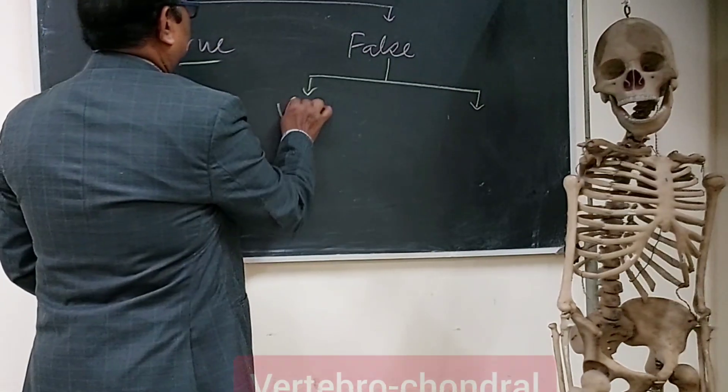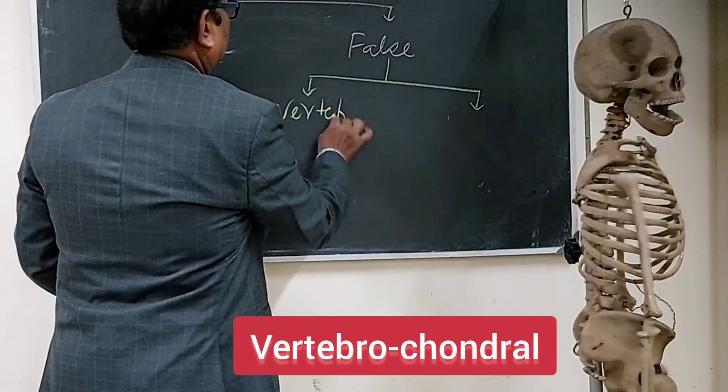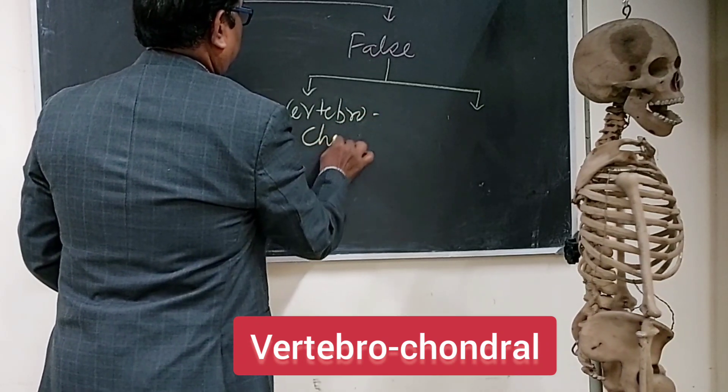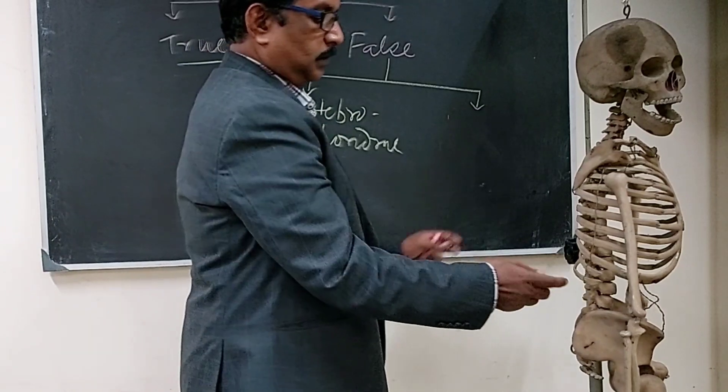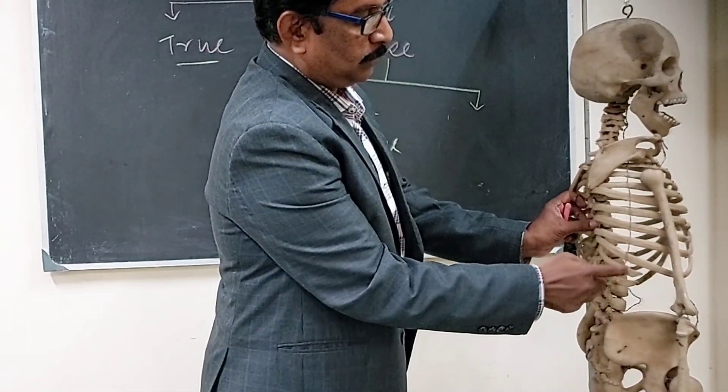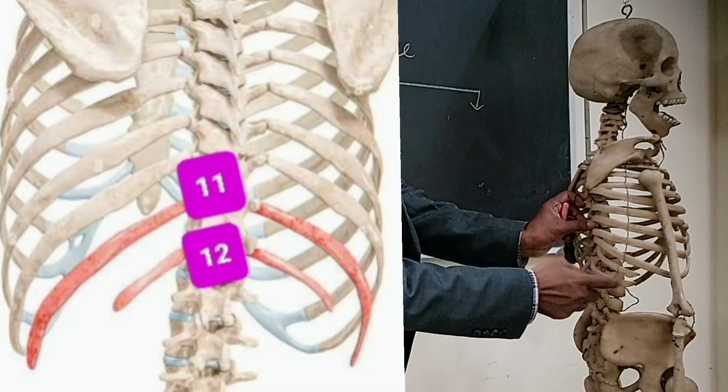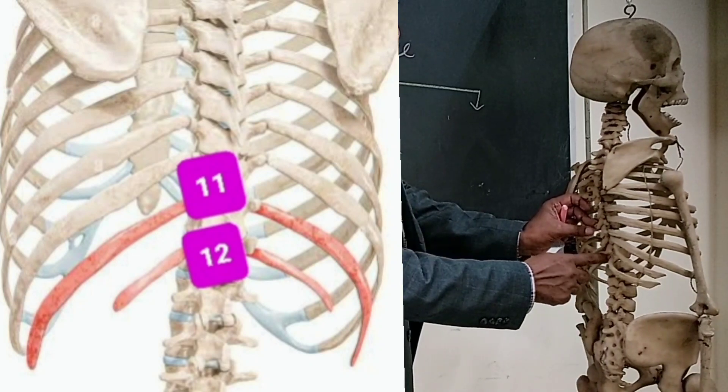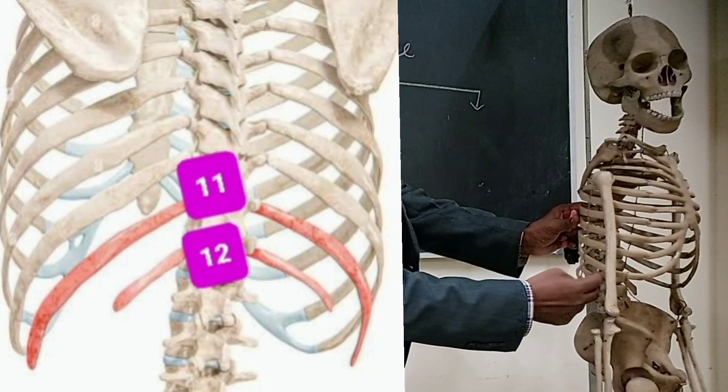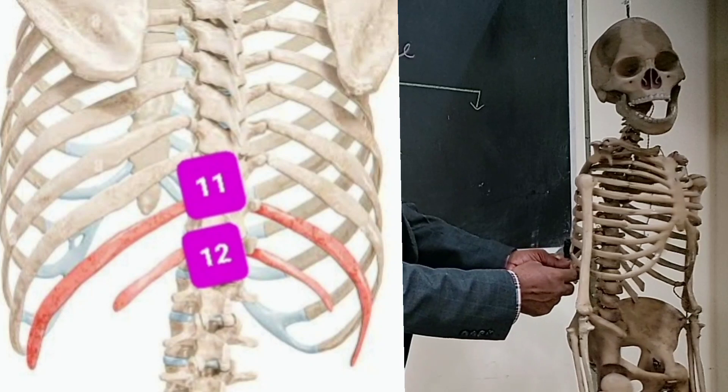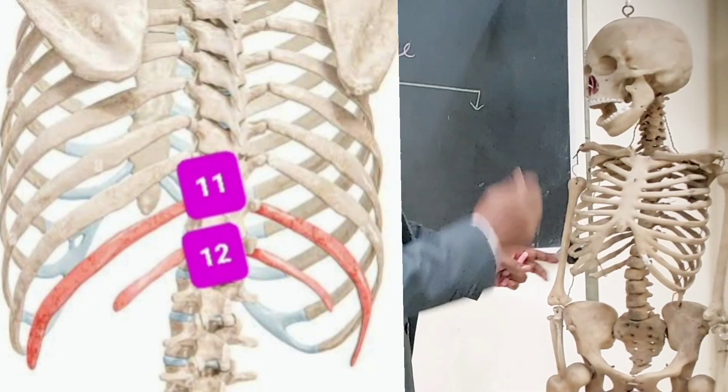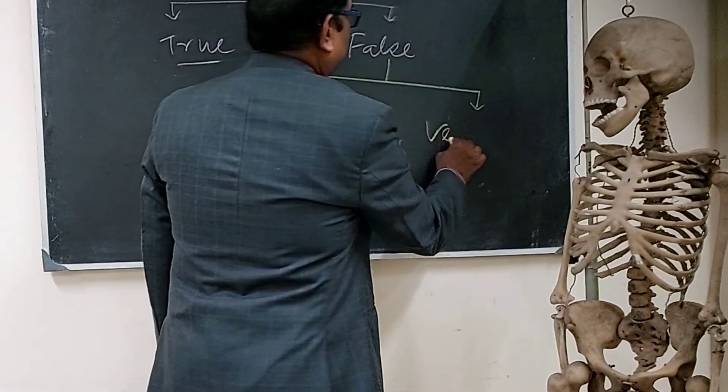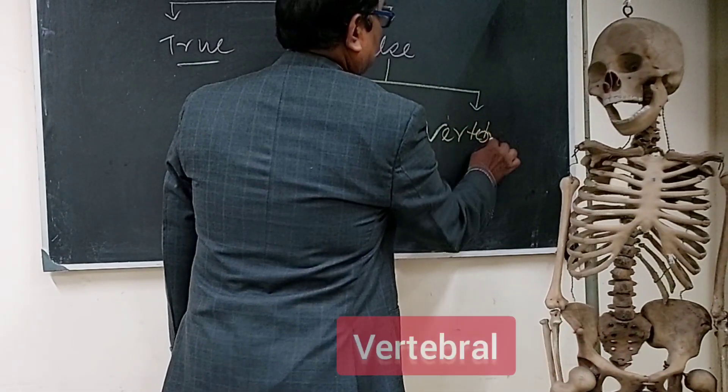Vertebrochondral, and some ribs - that means the last two, 11th and 12th - these two ribs are articulated with the vertebra behind but free anteriorly because they are floating ribs. They are not articulating with the costal cartilage and neither to the sternum. So they are called vertebral articulation.